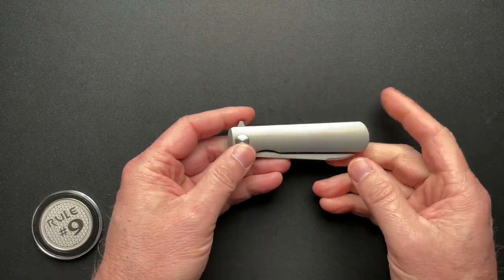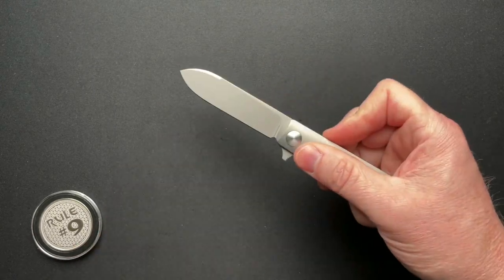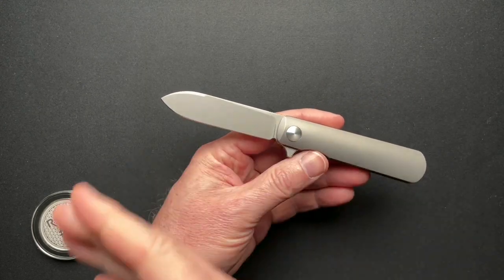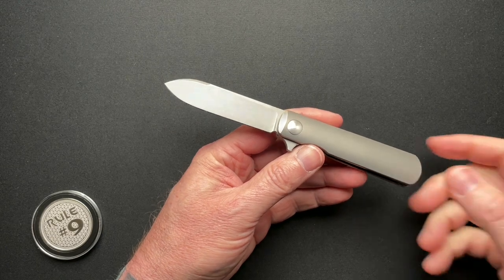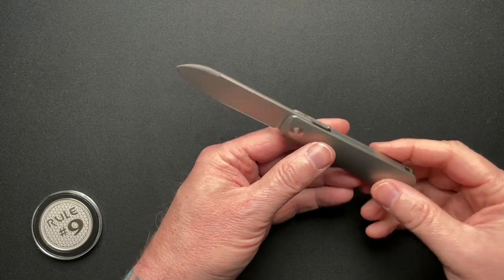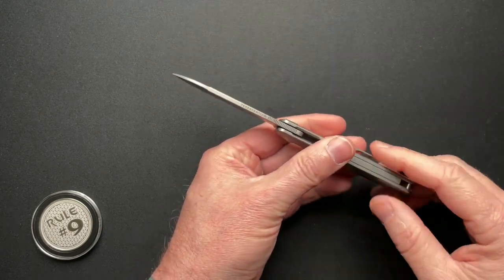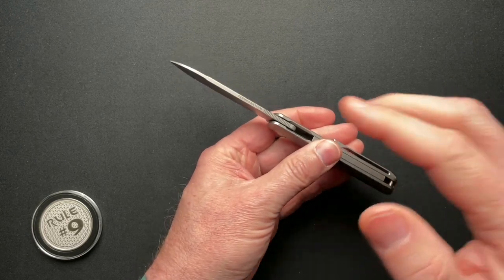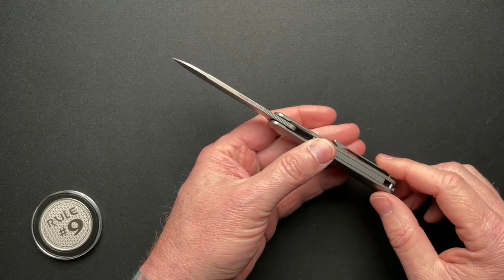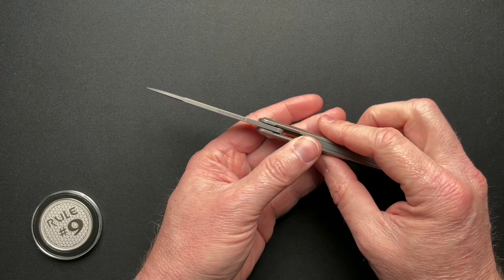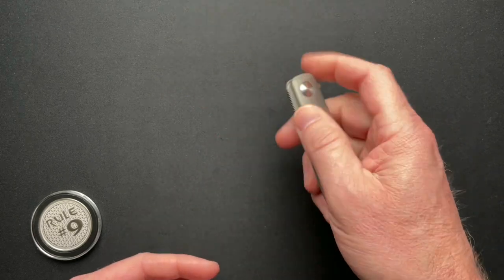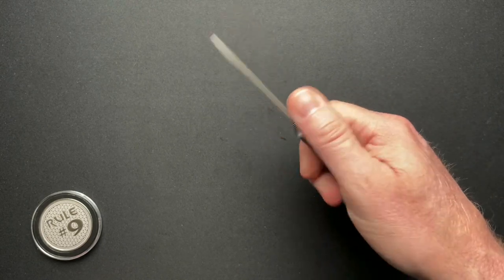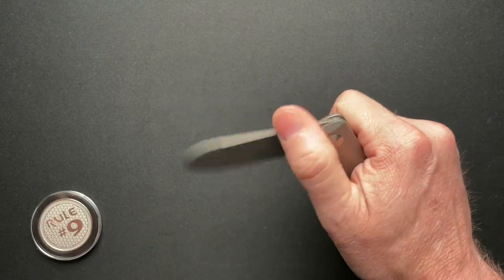It is three and seven eighths closed, six and seven eighths overall. That gives you a 3.02 inch blade length with a 2.9 inch cutting edge. It is Terravantium, and it is 0.116 blade thickness. Overall thickness is 0.470. Runs on ceramic bearings with a ceramic detent, so everything is non-corrosive.